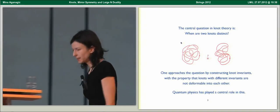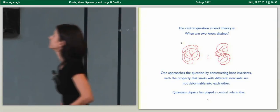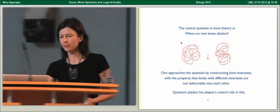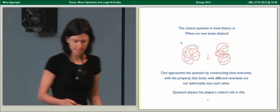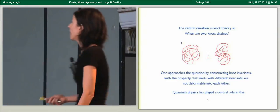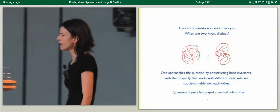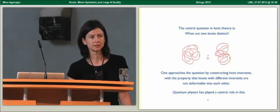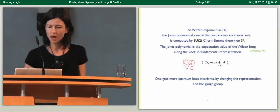The central question of that subject is when are two knots distinct. One approaches this question by constructing knot invariants with the property that any two knots with different invariants are not deformable to each other. In discovery of these knot invariants, quantum physics has played a central role.